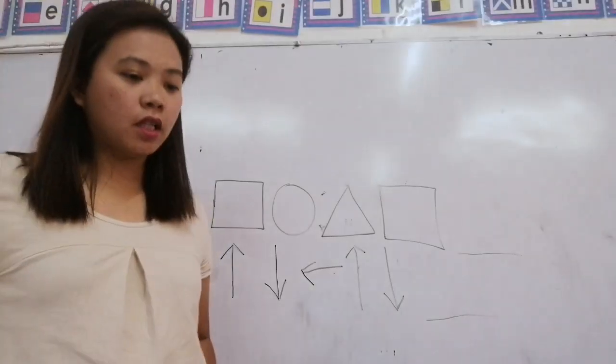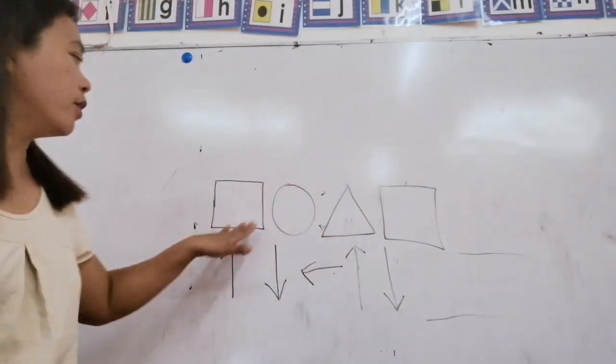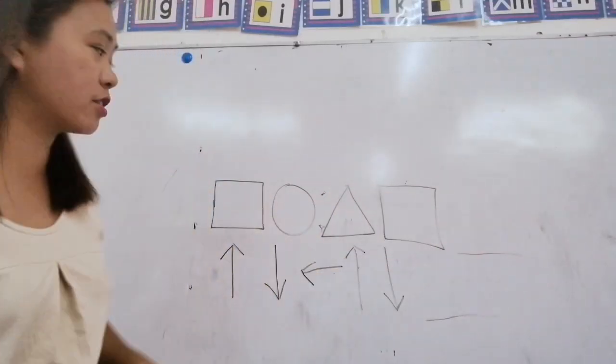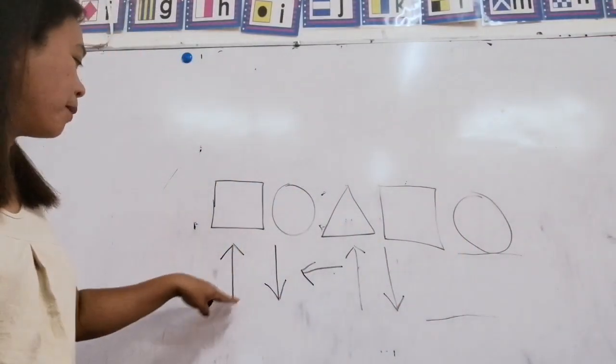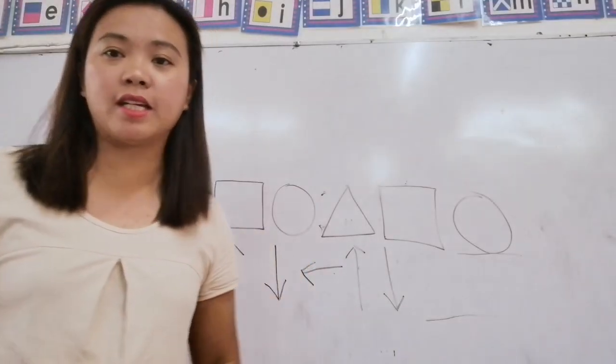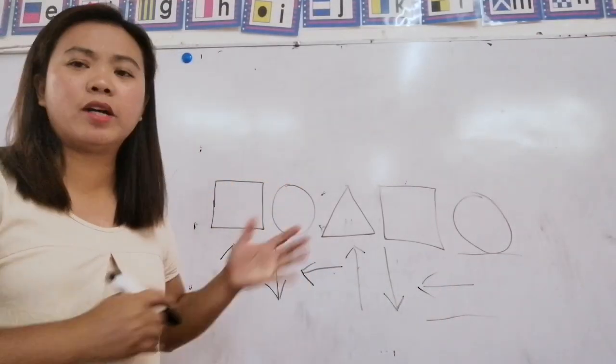Now please proceed to patterns on page 237. For the pattern, you're going to identify which one will be the next. We have here square, circle, triangle, triangle, triangle. What's the next one? That's right, it's the circle. Next: up, down, left, up arrow, left, up, down. What should be the next one? Very good, arrow left also.